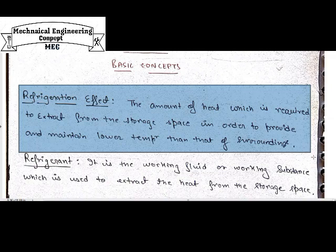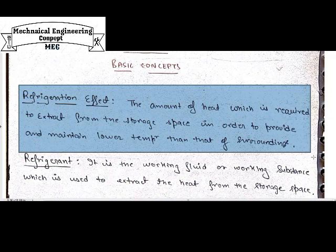We can see this effect in our fridge and AC. The refrigeration effect can be understood on the basis of heat which is taken from the storage to maintain its temperature lower than the surrounding. We can see this example in the refrigerator, in which storage of fruits, eating material, or any food item that we store is kept at a lower temperature. In that process, the heat is extracted from the storage and taken out to the surrounding.